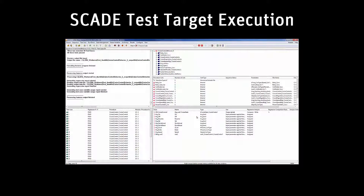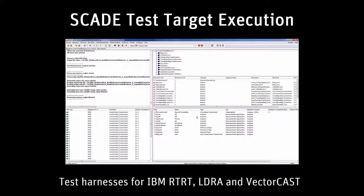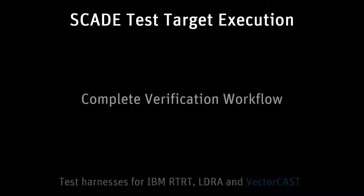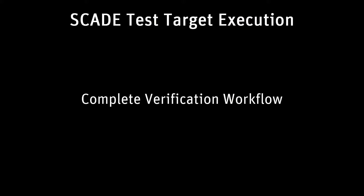SCADE Test Target Execution allows you to automate the generation of test harnesses from the same set of model-based test cases for COTS on-target test execution tools like IBM RTRT, LDRA Testbed, and VectorCast. It enables a complete verification workflow from high-level requirements-based testing on model, down to integration testing on target.